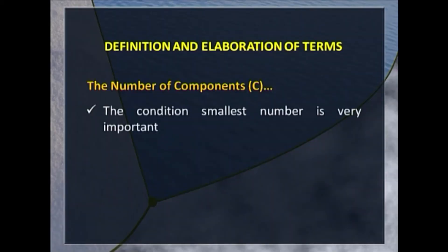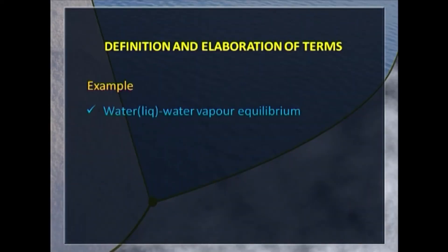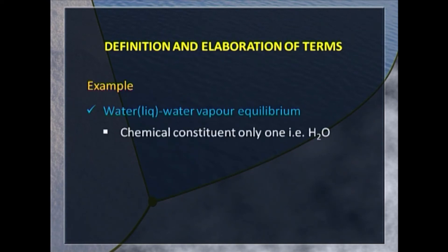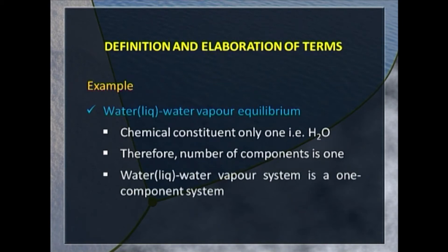The condition 'smallest number' is very important. It is immaterial which particular constituents are chosen as components, but it is their number that is important. For example, if you have water liquid and water vapour in equilibrium, the chemical constituent present is only one — H2O — therefore the number of components is one. Any system consisting of a single chemical individual is always a one-component system.